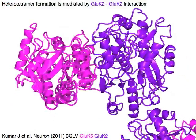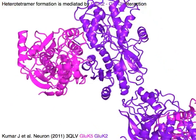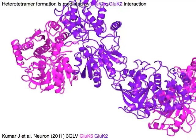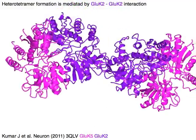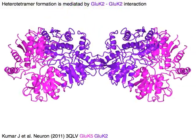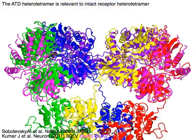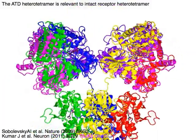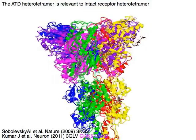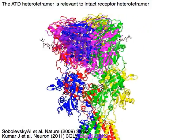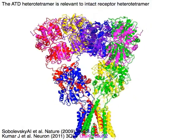Heterotetramer formation is mediated by GLU-K2 and GLU-K2 interaction. The ATD heterotetramer is relevant to intact receptor heterotetramer assembly.